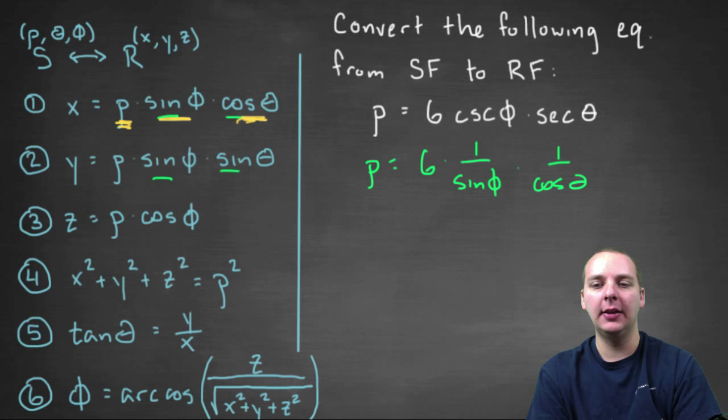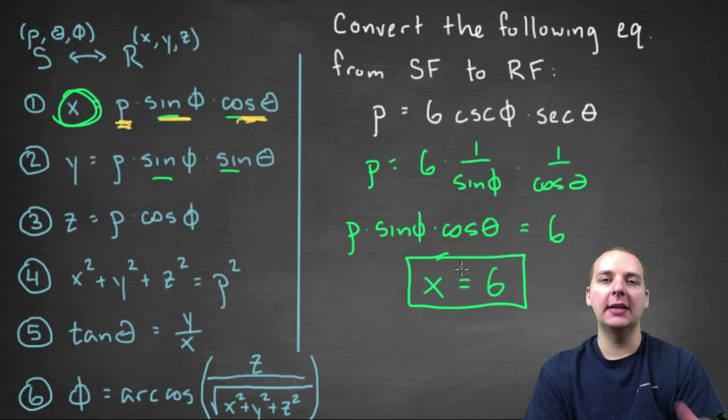Because these two guys are in the denominator, let's multiply these two guys over to the left, and you would get rho times sine phi times cosine theta equals six. And based off of our conversion, that product equals x. So you can take all that stuff out and replace it with an x, and we're done. We get an equation, x equals six.